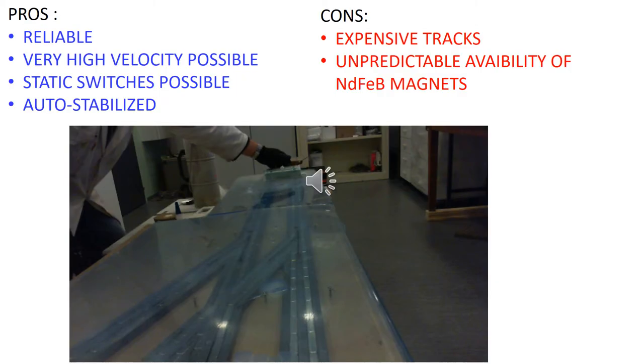The main drawbacks of SML systems are the cost of the tracks and the unpredictable availability of the magnets. Their main advantages are planar tracks and the possibility to build static switches, as shown by this model built in our lab.